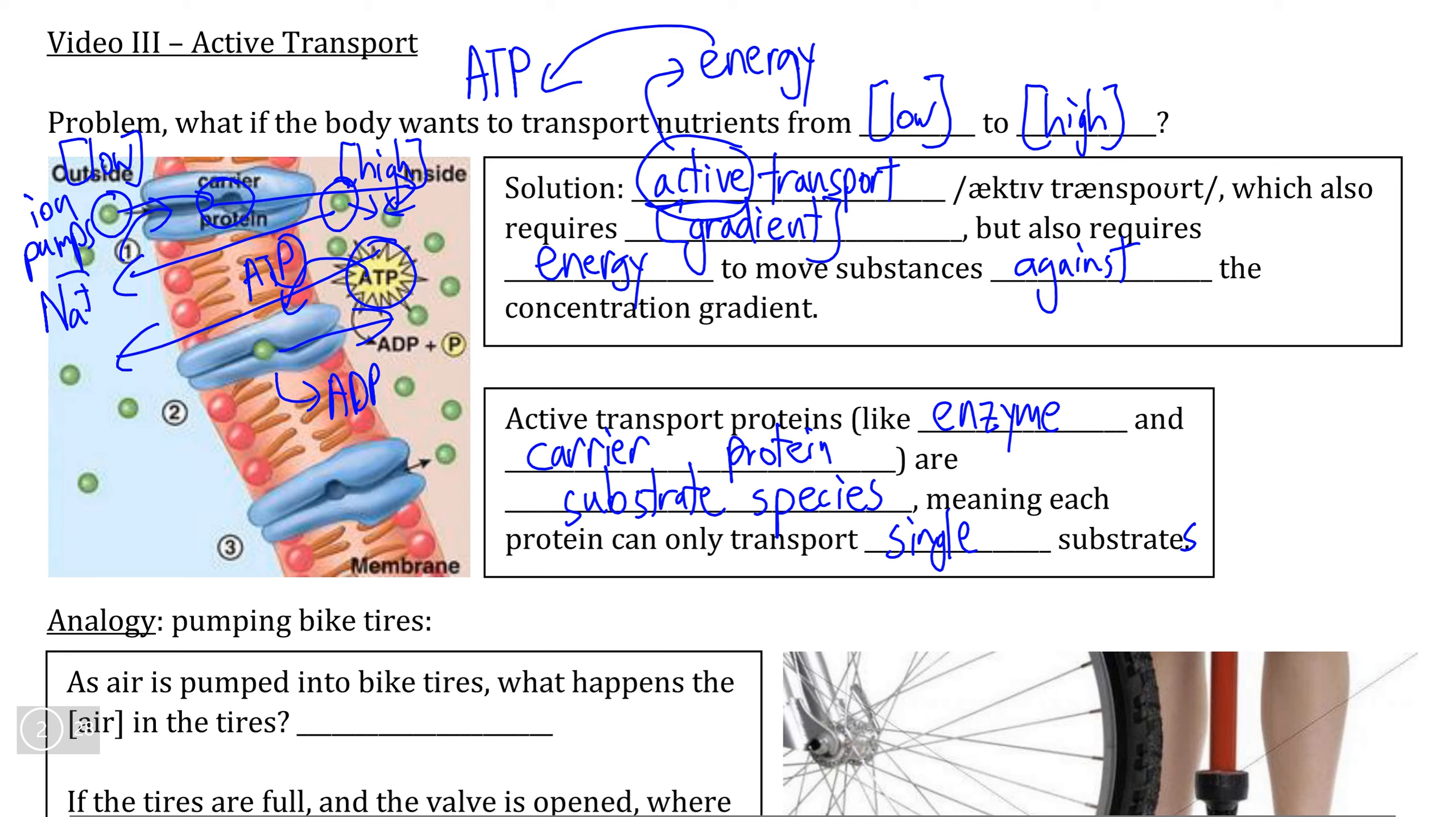Not every carrier protein transports ions. Many carrier proteins specifically transport types of nutrients like carbohydrates or amino acids or even larger substances potentially.